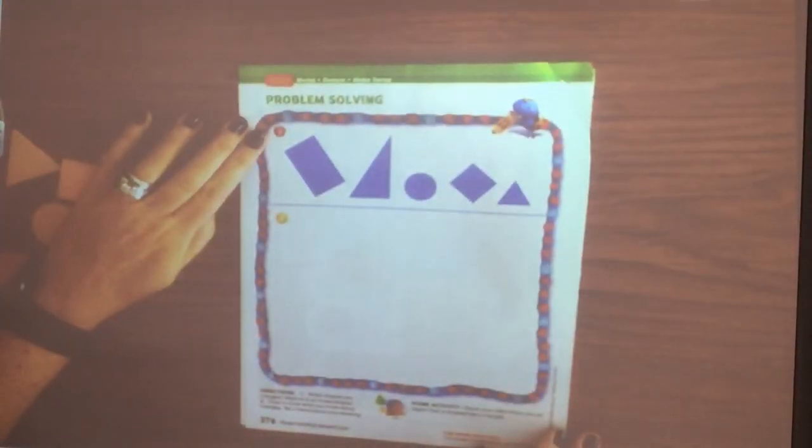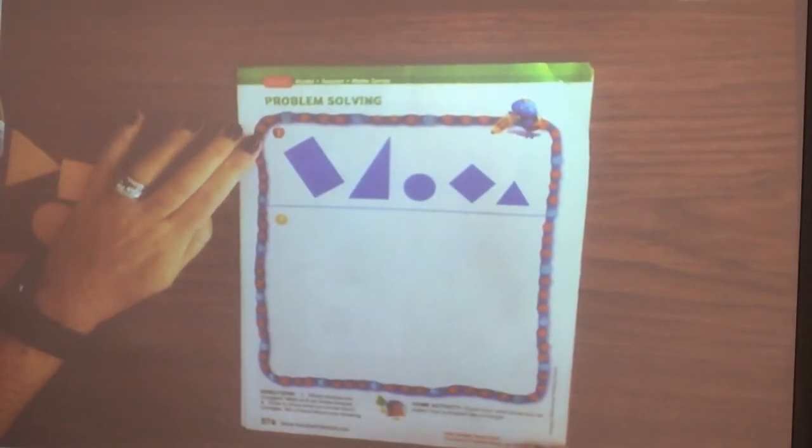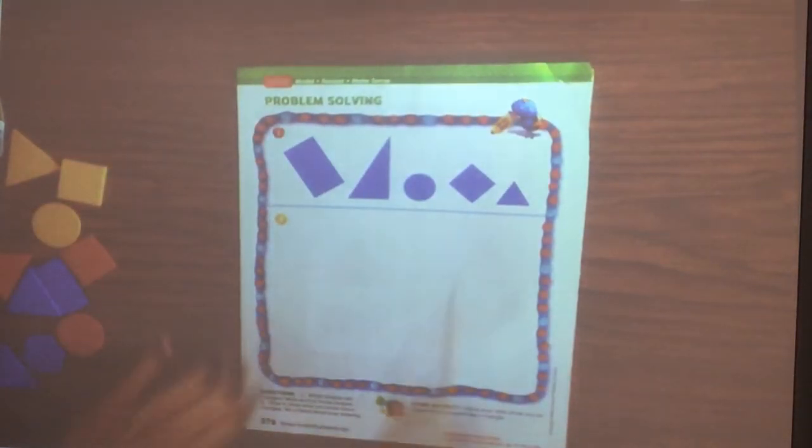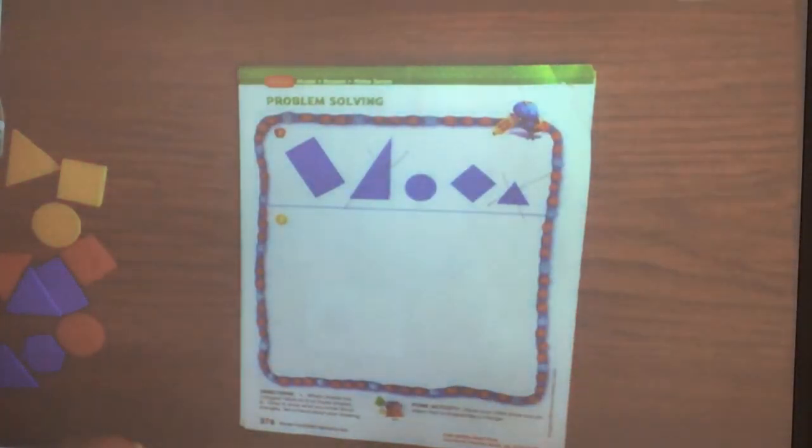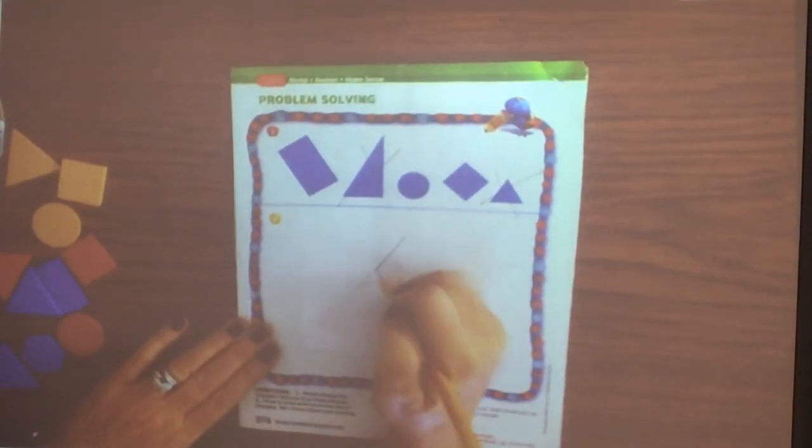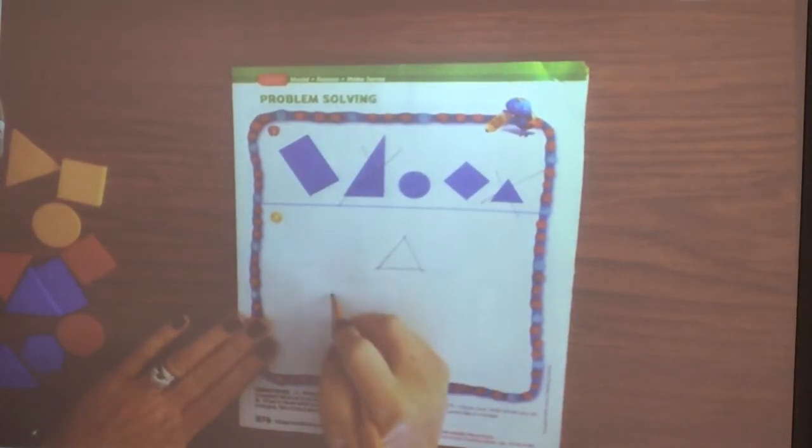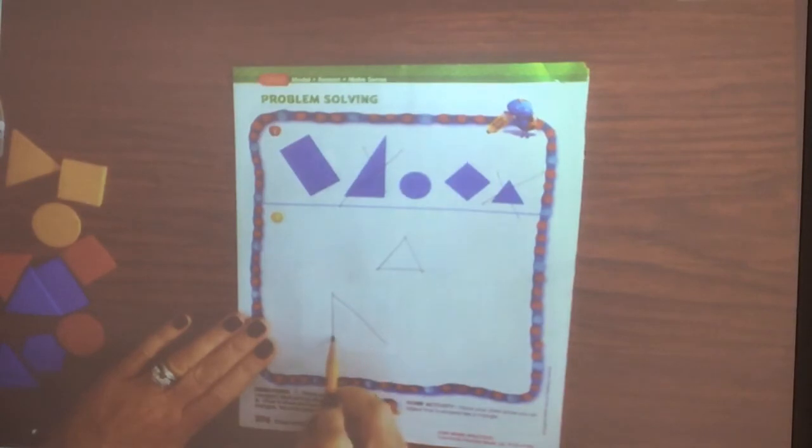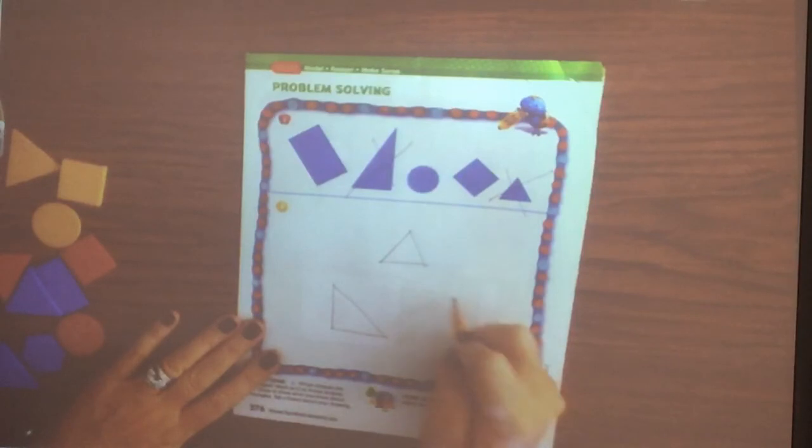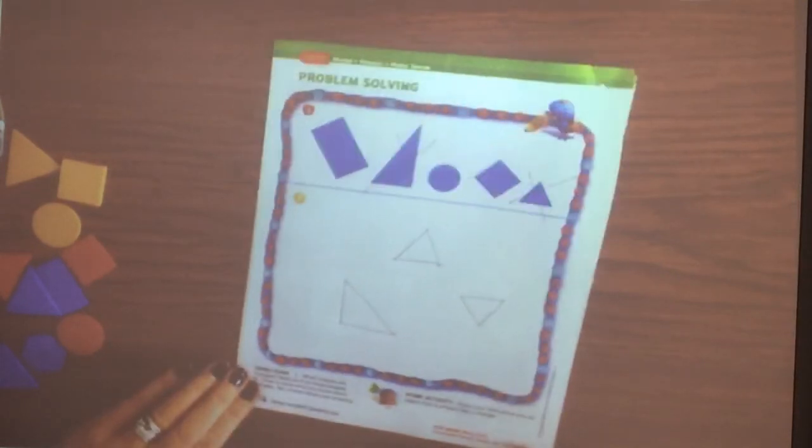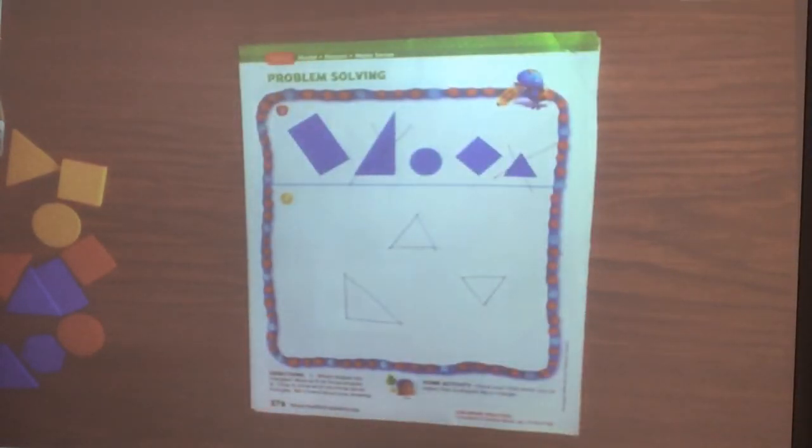Then on the back by the red apple, which shapes are triangles? Put an X on them. I see one, two. Then at the bottom, draw to show what you know about triangles. So you can draw triangles. Just make sure they have three sides and three vertices. You can make them tall, you can make them small. As long as it has three sides and three vertices, it does not matter which way you turn it.